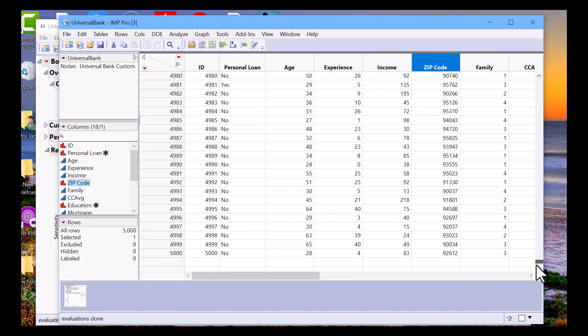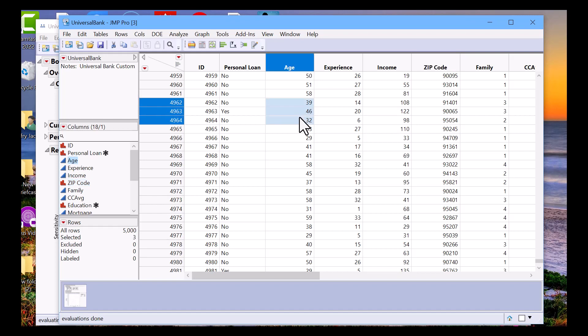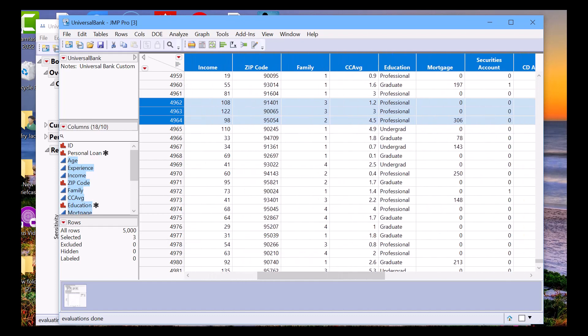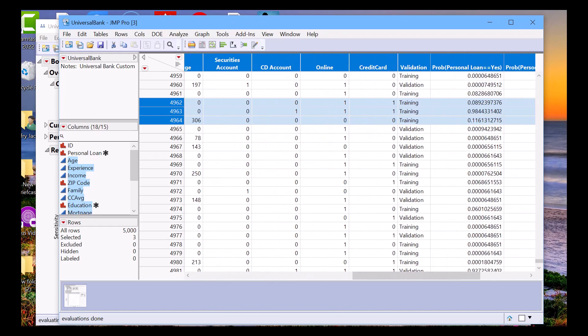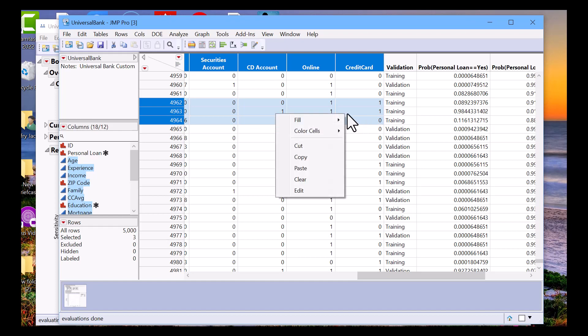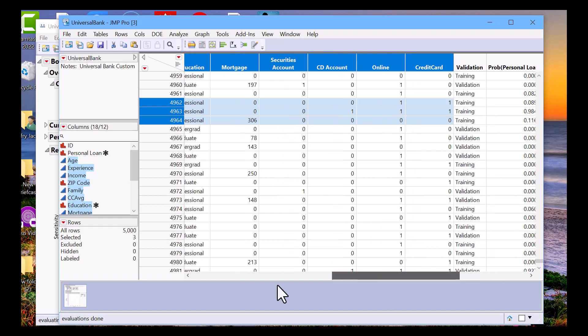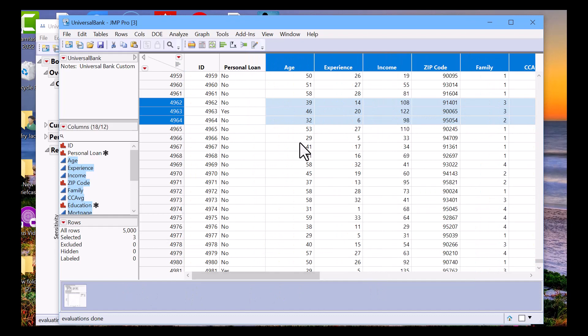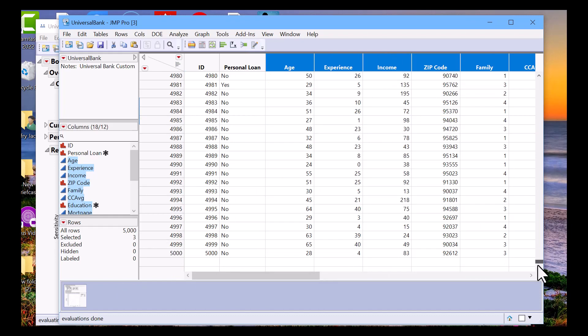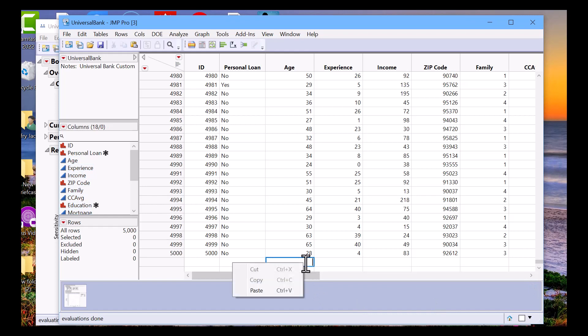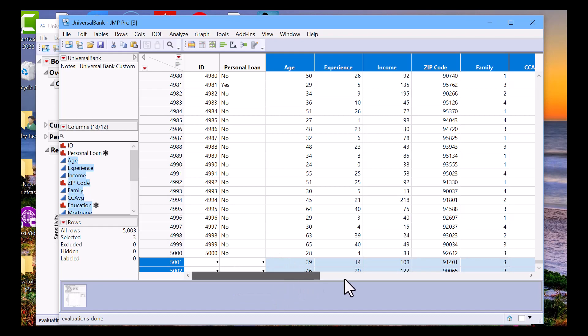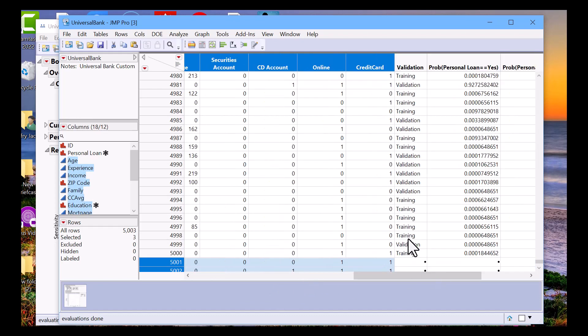Here we see that we have the probability of yes and no for each record. Suppose I had a new record, let's say we'll just pick these two observations. Ideally you would have new data to score. We'll just select our variables all the way to credit card. I'm going to copy it. Now, pretend that we have new data that we're bringing in. Once we have the new data set to score, we can simply paste that data set here, and the model will, based on random forest, predict the outcome.